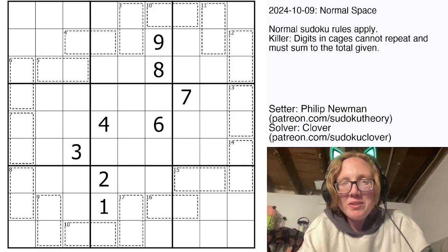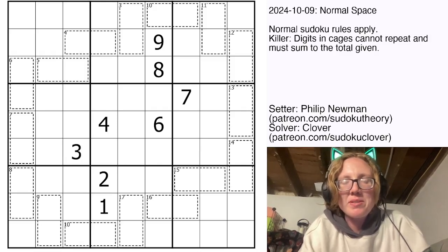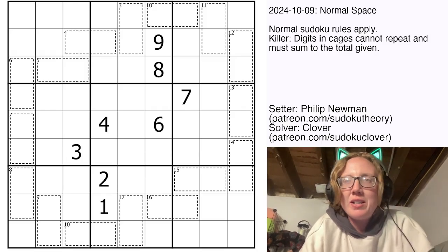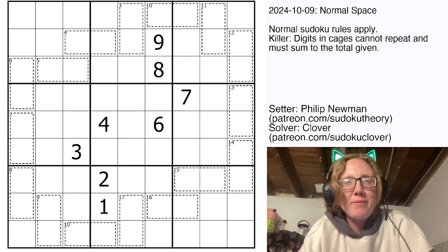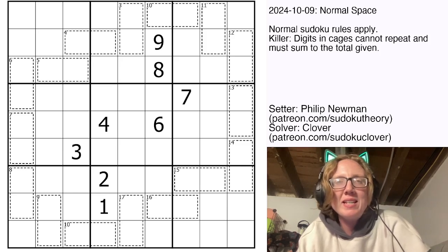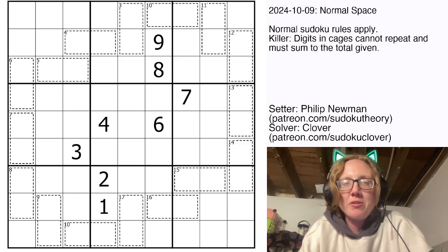Hello, my friends. I'm Clover, and this is the puzzle that was originally posted on October 9th, 2024. It is called Normal Space, and it's a Killer Sudoku by Philip Newman.